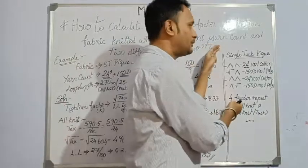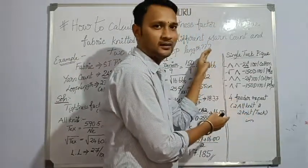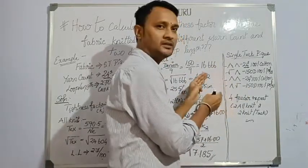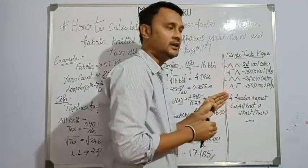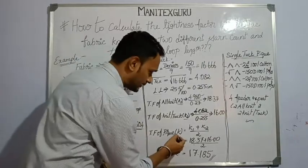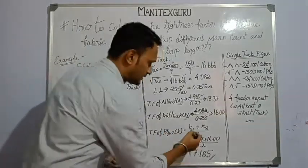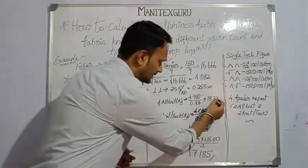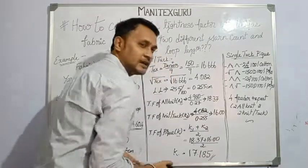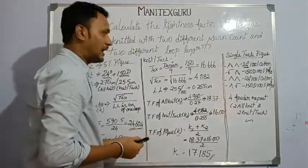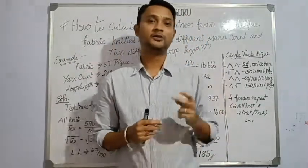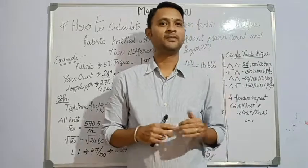During the fabric structure study, we saw that there is 50% contribution from 24 Ne 100% cotton and 50% contribution from 150 denier 100% polyester. To calculate the average tightness factor K for the single tuck PQ fabric, the formula is K = (K1 + K2) ÷ 2 = (18.37 + 16) ÷ 2 = 17.185. This is the average tightness factor for the single tuck PQ fabric knitted with two different yarn counts and two different loop lengths.